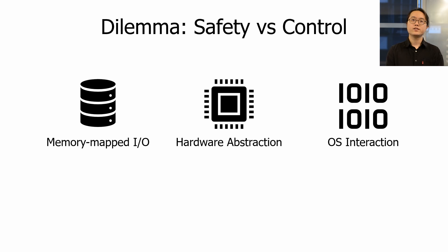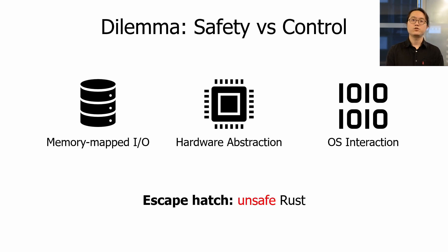However, there is an inherent dilemma between safety and control. Certain operations cannot be handled with safe languages because they are not part of the language runtime. Such operations include memory-mapped I/O and interaction with hardware or the operating system. As a systems programming language, Rust needs to support these cases. To allow these operations, Rust provides an escape hatch called unsafe Rust.